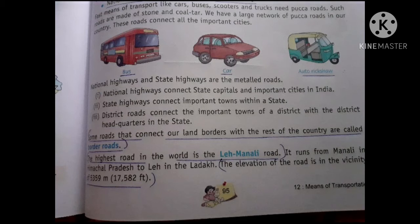There are two kinds of highway: National Highway and State Highway. National Highway connects states, capitals and important cities in India. Some roads that connect our land borders with the rest of the country are called border roads. The highest road in the world is the Leh-Manali road.